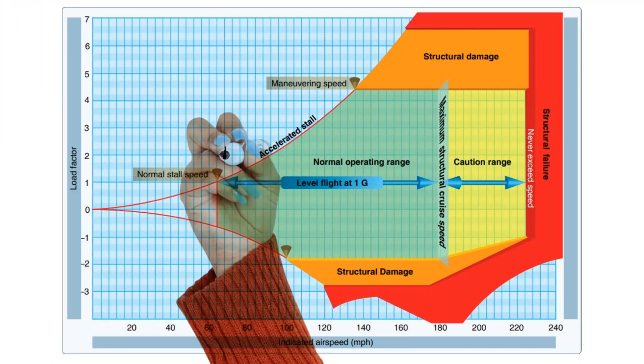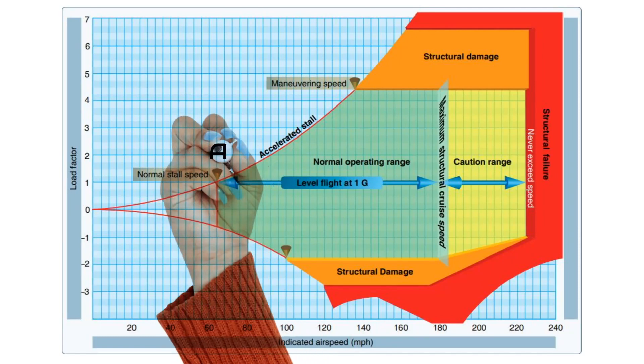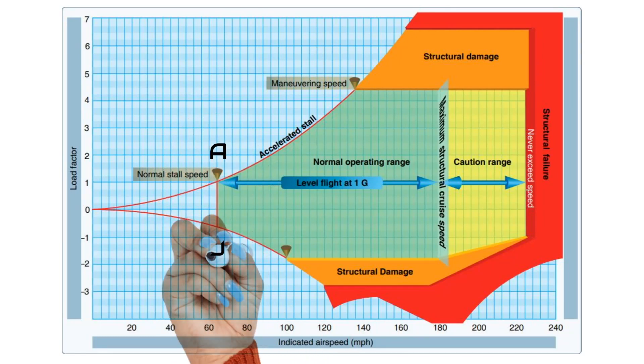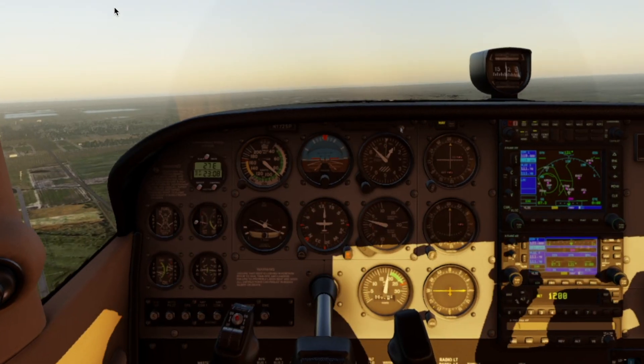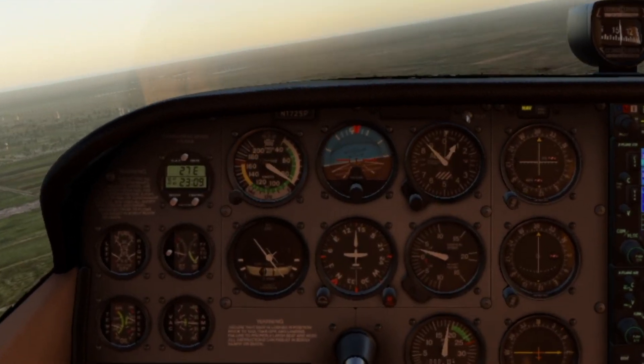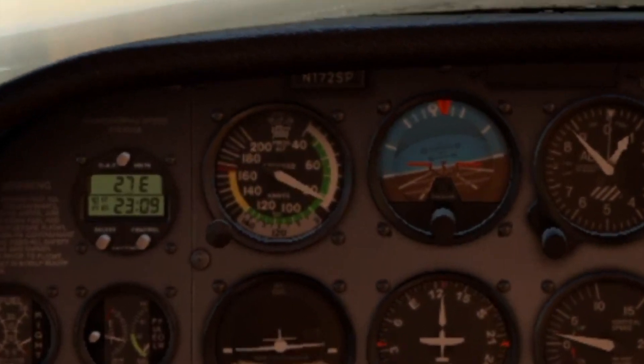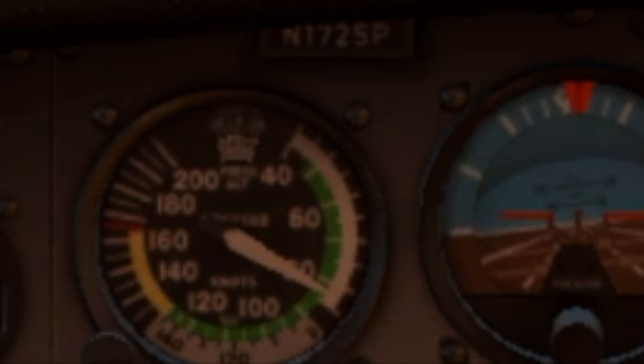From point A to point J is the stalling airspeed, or VSO. Below this point, our airplane will stall regardless of what the load factor is. We see this on our airspeed indicator represented by the bottom part of the white arc.